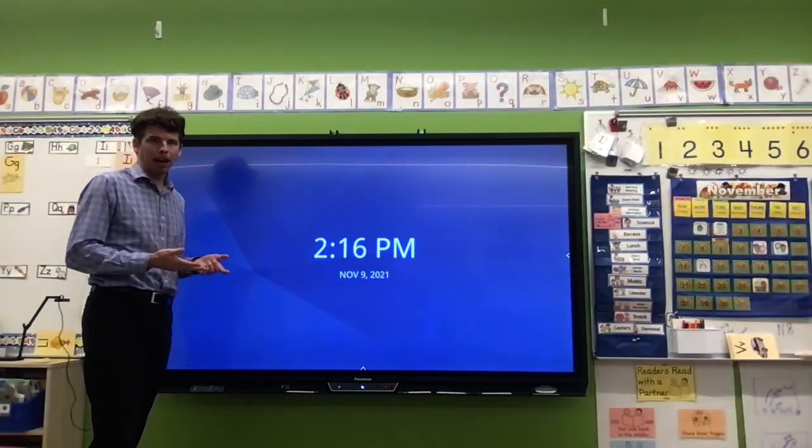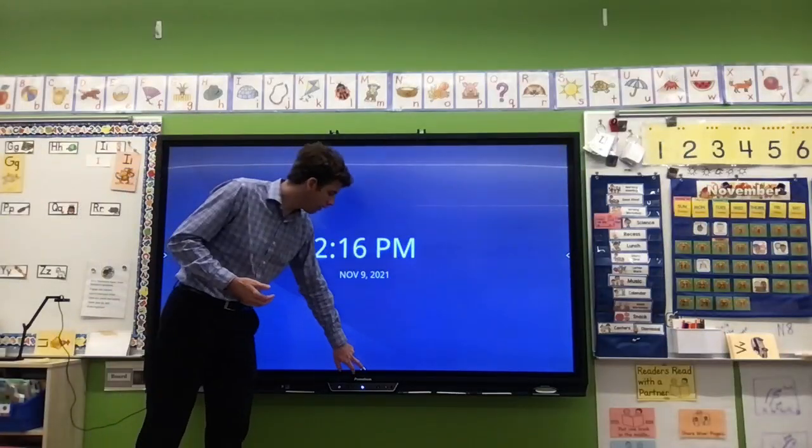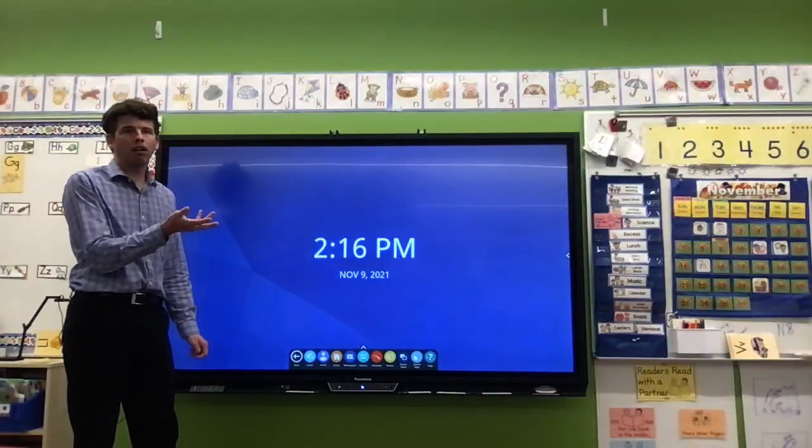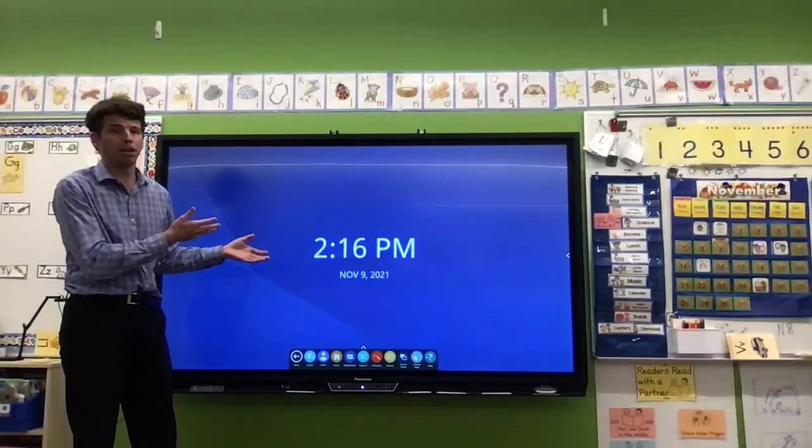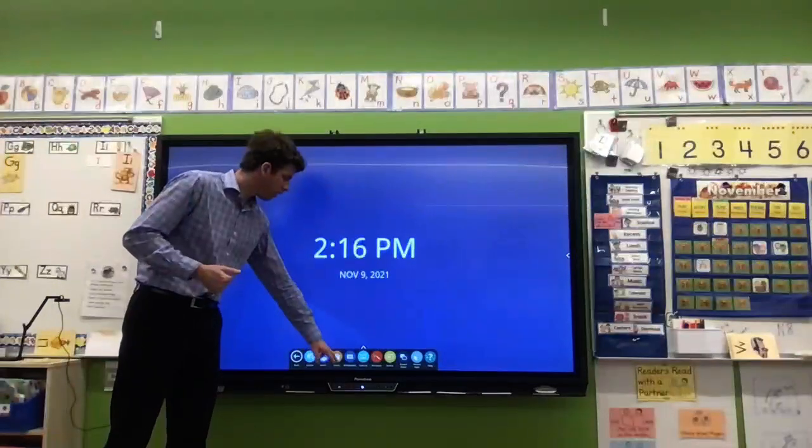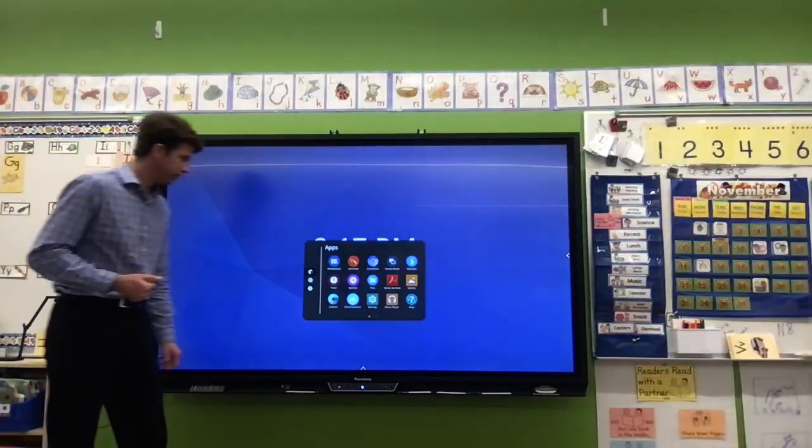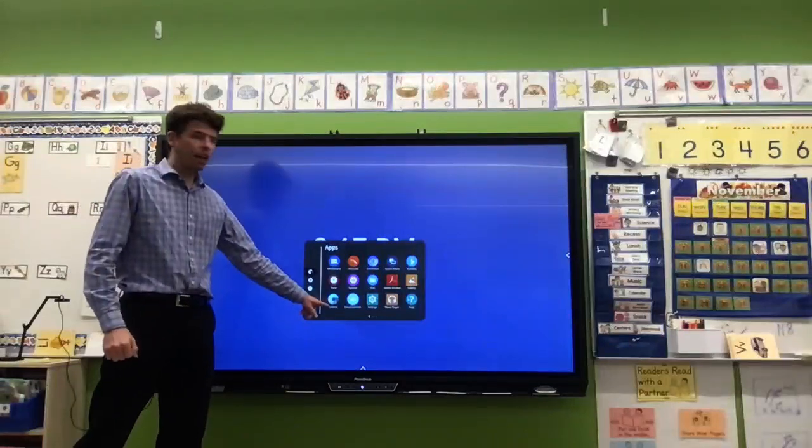So the active panel does have a camera app built into it. It's not the same that we're used to with our teacher computers. It's very simple, it's just pretty much showing the picture. To get to it I'm going to hit on the locker and then I'm going to click the camera icon.